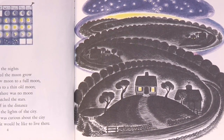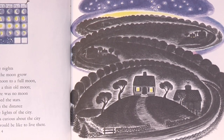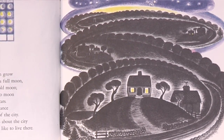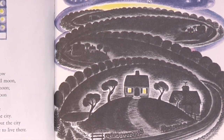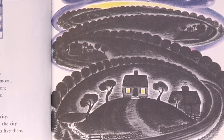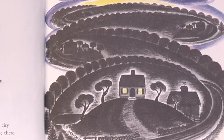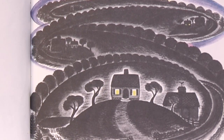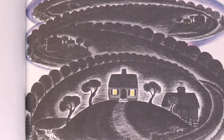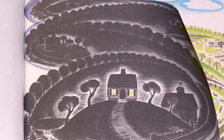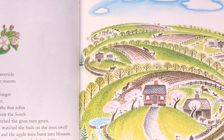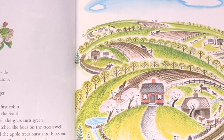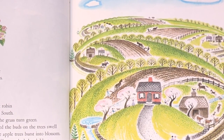In the night she watched the moon grow from a thin new moon to a full moon, then back again to a thin old moon. And when there was no moon, she watched the stars. Way off in the distance she could see the lights of the city. The little house was curious about the city and wondered what it would be like to live there. Time passed quickly for the little house as she watched the countryside slowly change with the seasons.